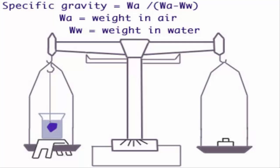Apparent specific gravity is the ratio of the weight of the volume of the substance to the weight of an equal volume of the reference substance.